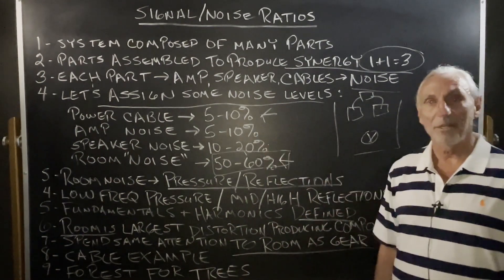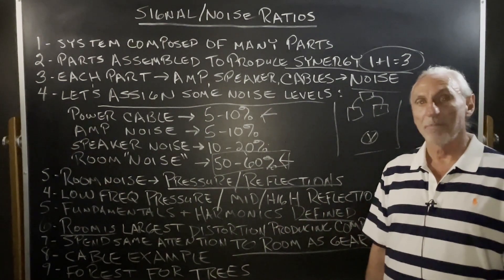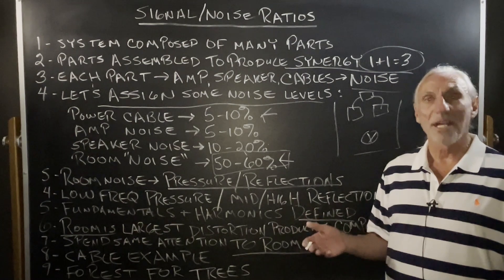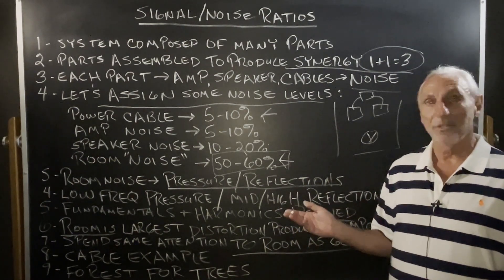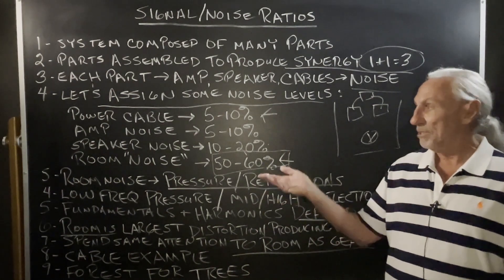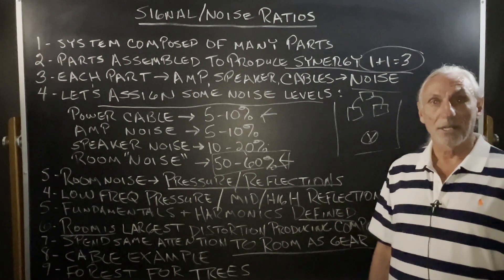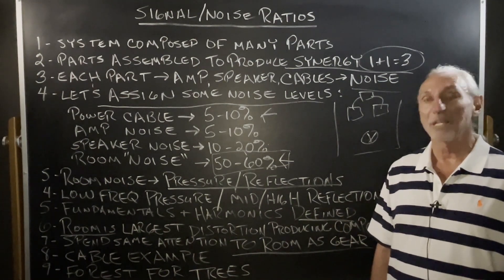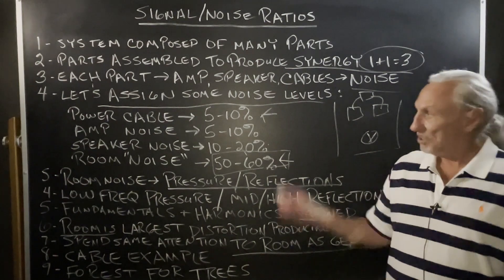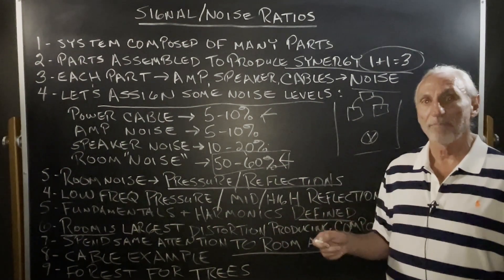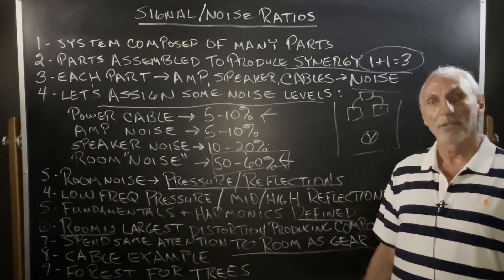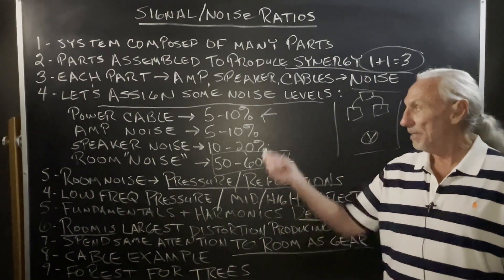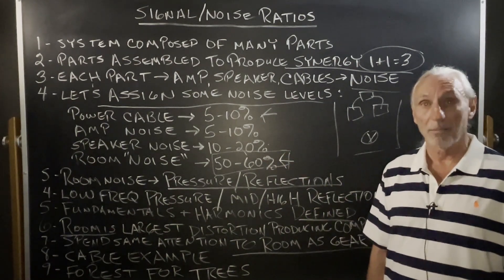Look at your system as a complete system and include your room, because it accounts for most of the distortion you're going to hear. Our cables and amplifiers today are wonderful. I haven't bought gear for 20 to 25 years, but I've noticed the changes — speakers are still the weak link and I think they always will be. But power cables, amplifiers, interconnect speaker cables, and DACs all have very high resolution; the distortion is barely audible in most cases. Start stepping back, look at the whole situation. Come up with a budget that works — if you spend $20,000 to $25,000 fixing your room, you won't need to spend $20,000 on cables.